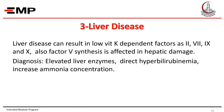The third cause of acquired bleeding in the newborn is liver disease. Liver disease can result in low vitamin K-dependent factors — factors 2, 7, 9, and 10 — and factor 5 synthesis is also affected in hepatic damage. Diagnosis is made by finding elevated liver enzymes, direct hyperbilirubinemia, and increased ammonia concentration.